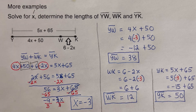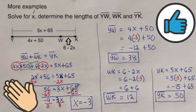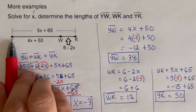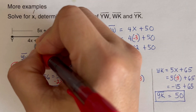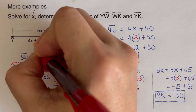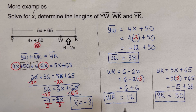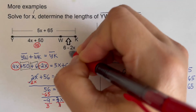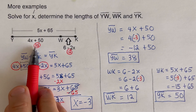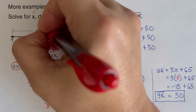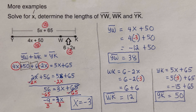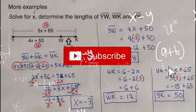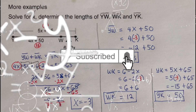Did you get the same answers? Good. Let's verify these numbers make sense: YW is 38 and WK is 12. Adding 38 plus 12 equals 50, which is YK. These numbers make sense. If you find this video helpful, hit like and subscribe for more math videos. See ya!